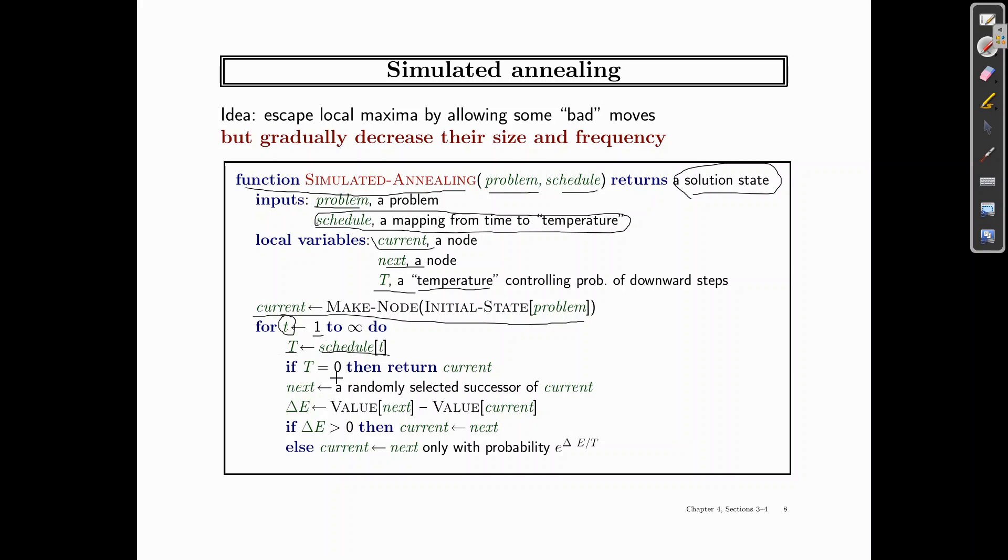If this is zero, then we simply return the current because we're looking for the minimum. Otherwise, we find a randomly selected successor of the current. And then we take a variable which is delta E, and this is the difference from this value and the next one: value of next minus value of current.